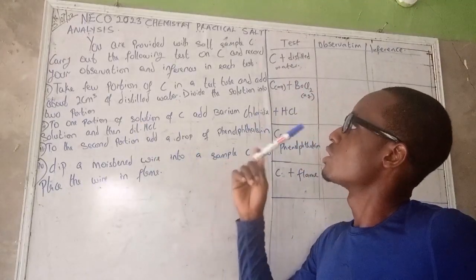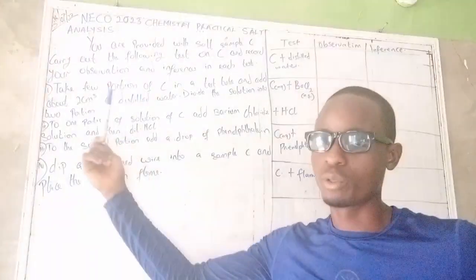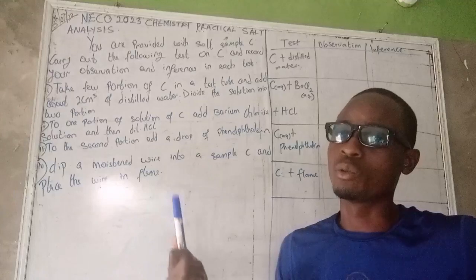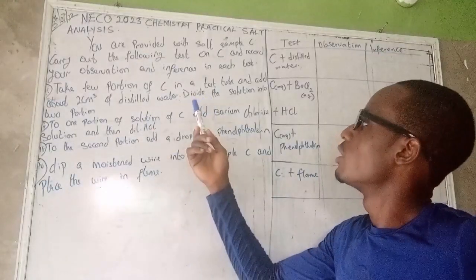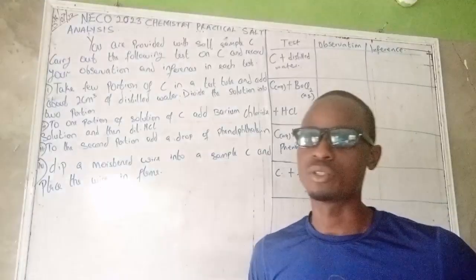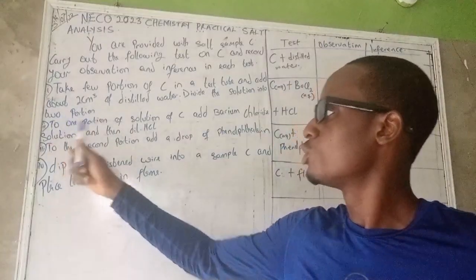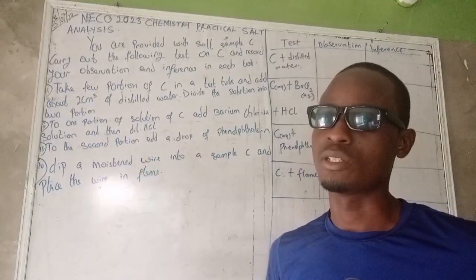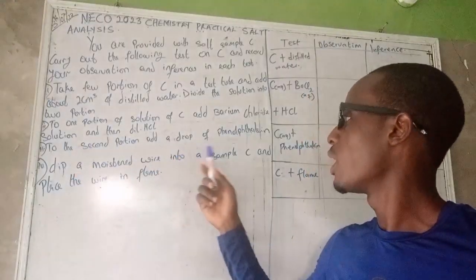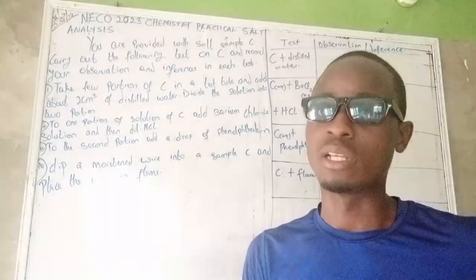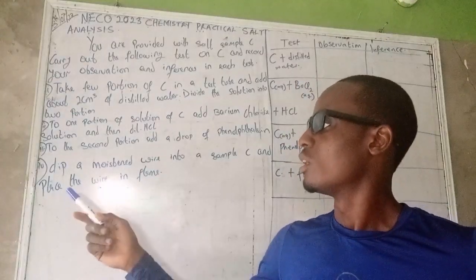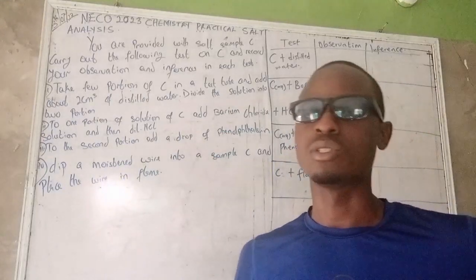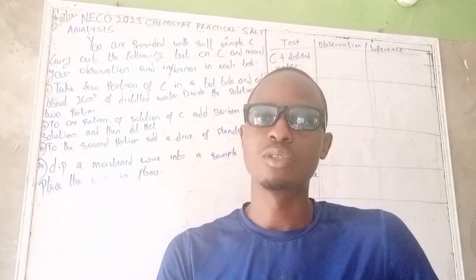So you are given a sample labeled C, and you are meant to carry out the following tests on sample C. The first one says: take a few portions of C in a test tube and add about two centimeters of distilled water — check whether it is soluble or insoluble. Then divide the solution into two portions. To the first portion, add barium chloride, then add dilute HCl (dilute hydrochloric acid). To the second portion, add a drop of phenolphthalein indicator. Finally, dip a moistened wire into sample C and place the wire in the flame to observe the response.